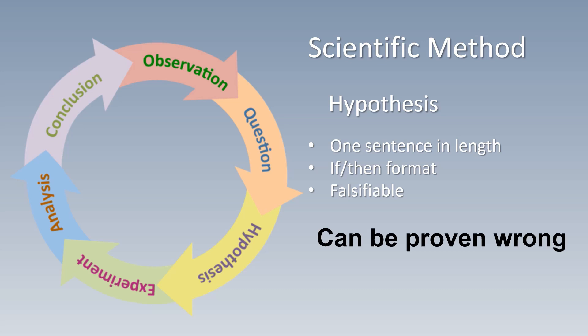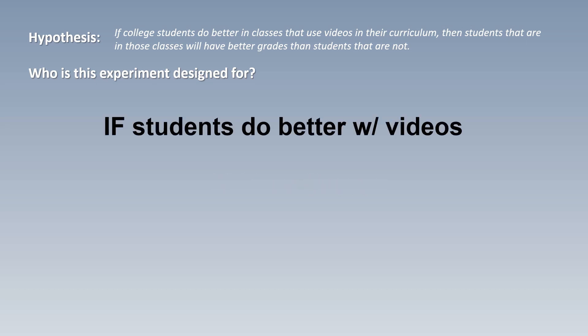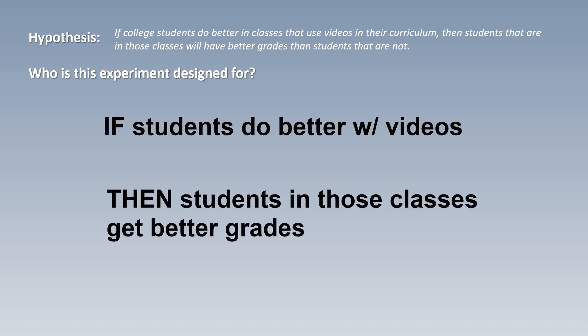That is important because we're doing the experiment to test the hypothesis. If I wanted to see if videos are more effective at teaching college students, my hypothesis would be something like: if college students do better in classes that use videos in their curriculum, then students in those classes will have better grades than students that are not. This is one sentence long, in an if-then format — if one thing is true, then something else must also be true.